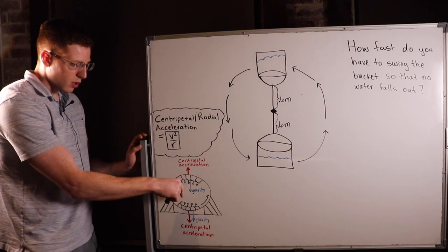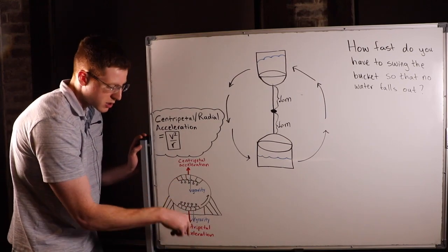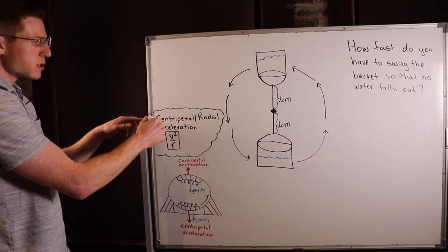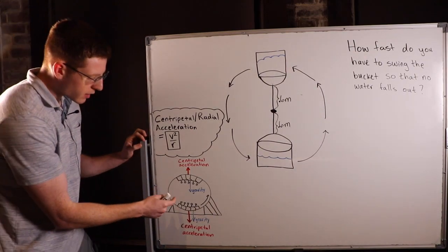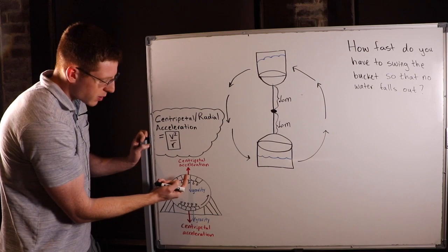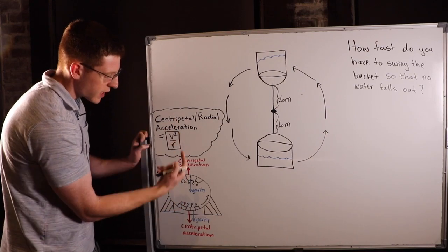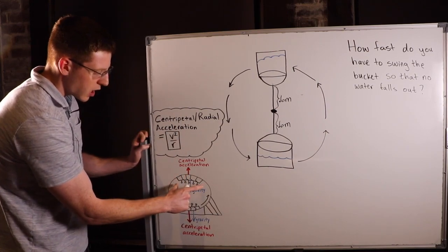Centripetal acceleration always acts directly out of a circle. Centripetal acceleration is present whenever you're moving in a circle or even a partial circle. So when you get to the top, centripetal acceleration is still acting directly out of the circle at the top of this loop.